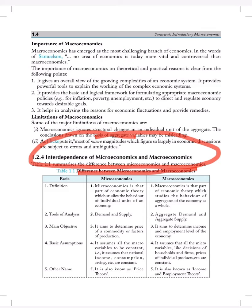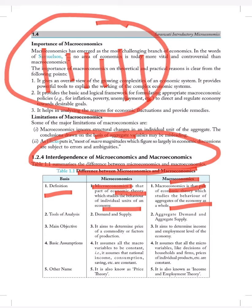First of all, the first basis is definition. As we have already discussed, microeconomics is that part of economic theory which studies the behavior of individual units of an economy. In macroeconomics, we study about individual units of economy. Macroeconomics is that part of economy theory which studies the behavior of aggregates of the economy as a whole. Suppose in microeconomy we are discussing about one person, and in macroeconomics we will be discussing about many persons together.